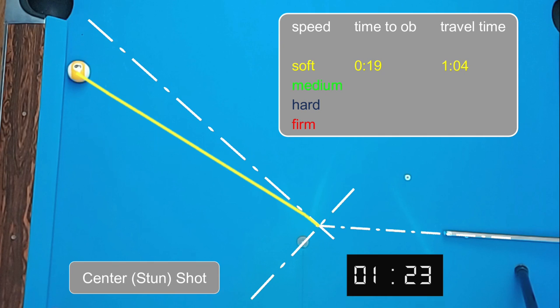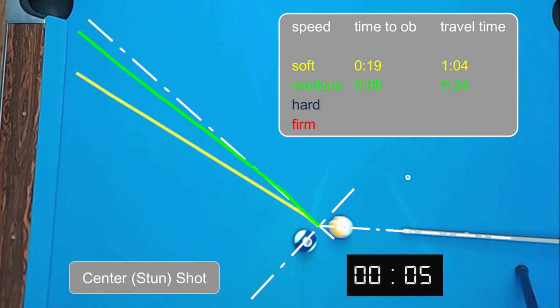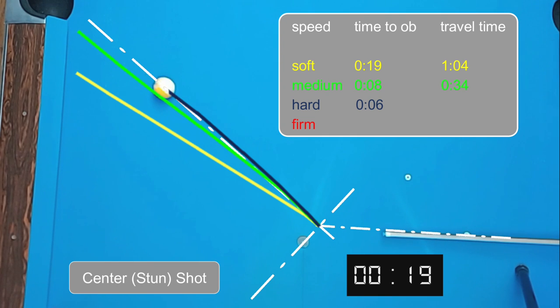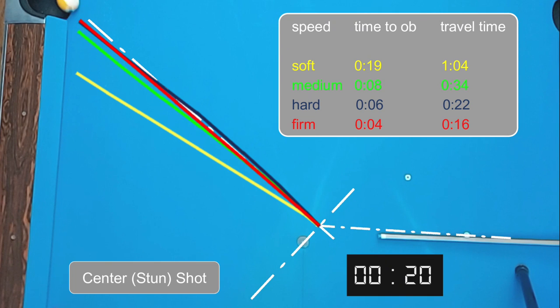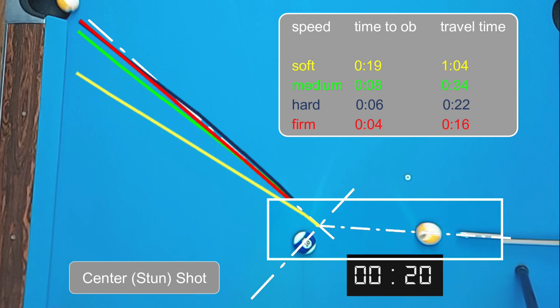Let's watch the next three shots as the cue ball is hit with a medium, hard, and very firm stroke. Notice that the relative time of cue ball to object ball indicates that I was able to vary the speed of the shot somewhat consistently. Each shot did exhibit a very slight amount of forward cue ball rotation on the way to the object ball, which I believe is the reason for the change in direction of each cue ball.